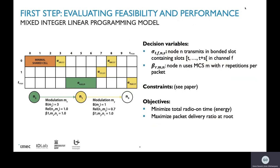We used a mixed integer linear programming model to evaluate the feasibility and performance, with two objectives: one, maximize the packet delivery ratio at the root; and two, minimize the total radio on time. We used two decision variables: alpha, which determines where a particular node transmits its packets in the schedule; and beta, which represents the number of repetitions a node N can try per packet with parameter R. For the exact constraints, we refer you to the paper.